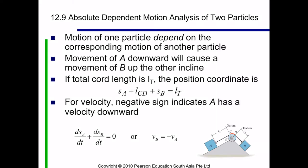Welcome to the absolute dependent motion analysis of two particles. In some types of problems, the motion of one particle will depend on the corresponding motion of another particle. This dependency commonly occurs if the particles, here represented by blocks, are interconnected by inextensible cords which are wrapped around pulleys. In this example, the movement of block A downwards along the inclined plane will cause a corresponding movement of block B upwards.